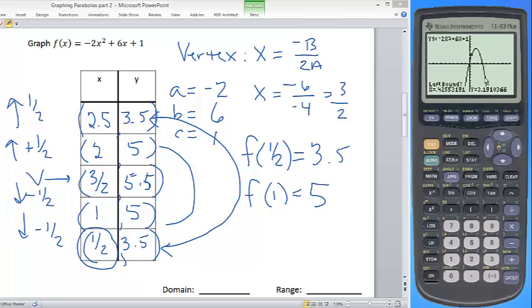The cursor on the graphing calculator is actually asking me to be somewhere to the left. So as long as I'm anywhere to the left of my cursor, I can hit enter. Now notice it's asking me for a right bound. That means I want to arrow to the right so that I get to any place that's actually to the right of my vertex and hit enter. And then lastly, I want to arrow back so that my cursor is blinking where I think my vertex is located.